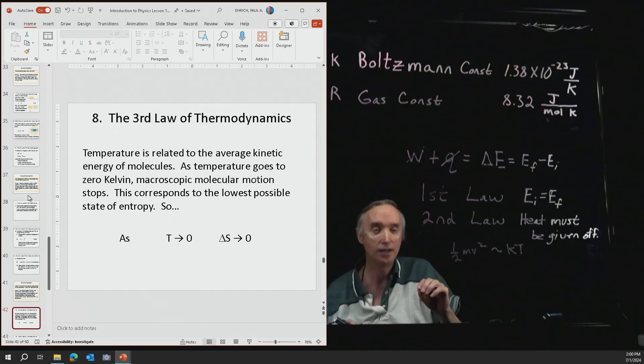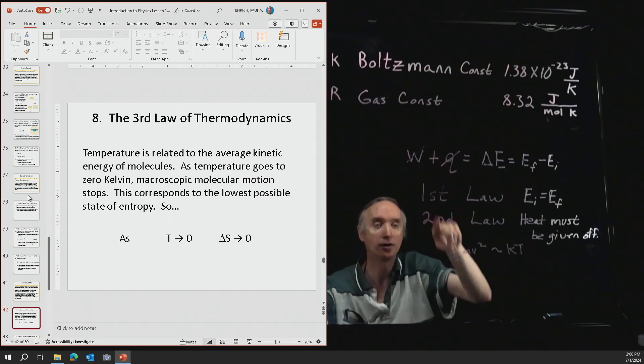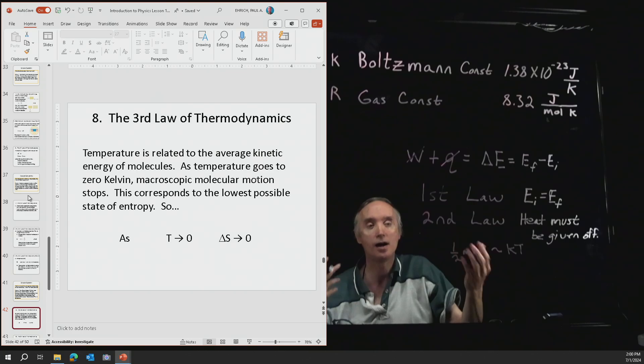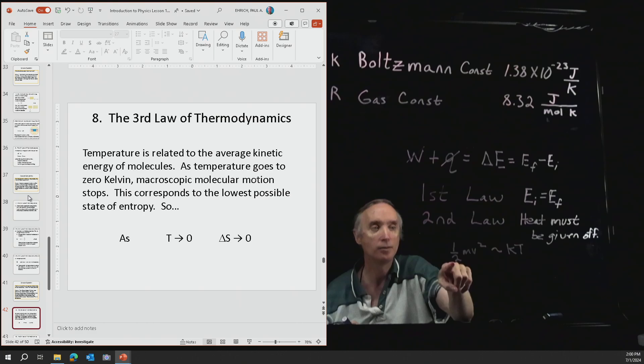A large entropy means that the molecules are moving around very fast, and it's a high temperature. As we decrease the temperature, these become more organized, and the entropy starts to decrease.